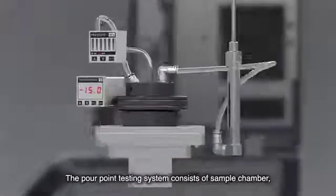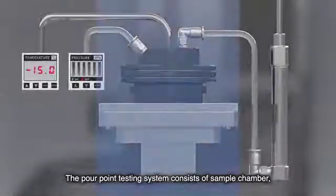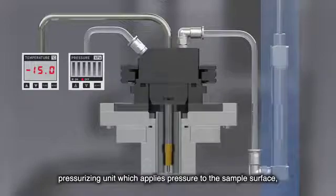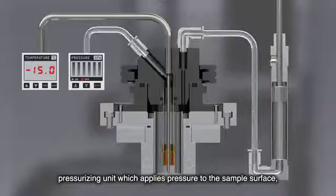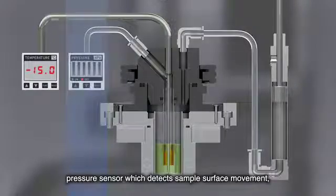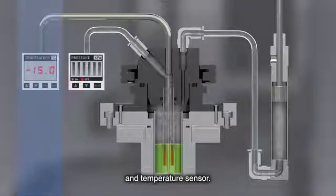The pour point testing system consists of sample chamber, pressurizing unit which applies pressure to the sample surface, pressure sensor which detects the sample surface movement, and temperature sensor.